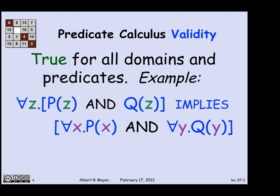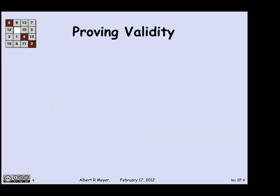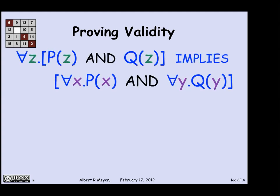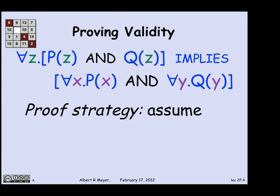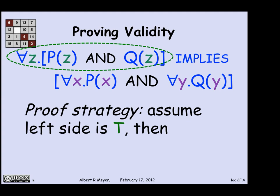Let me go one level in more detail and try to be more precise about a reason why this formula is valid. Suppose I wanted to prove that the formula is valid. It's an implication, so the proof strategy is I'm going to assume that the if part, the left-hand side of the implies, or hypothesis is true. That is that for every z, P of z holds and Q of z holds. Then I'm going to try to prove based on that that the consequent holds.